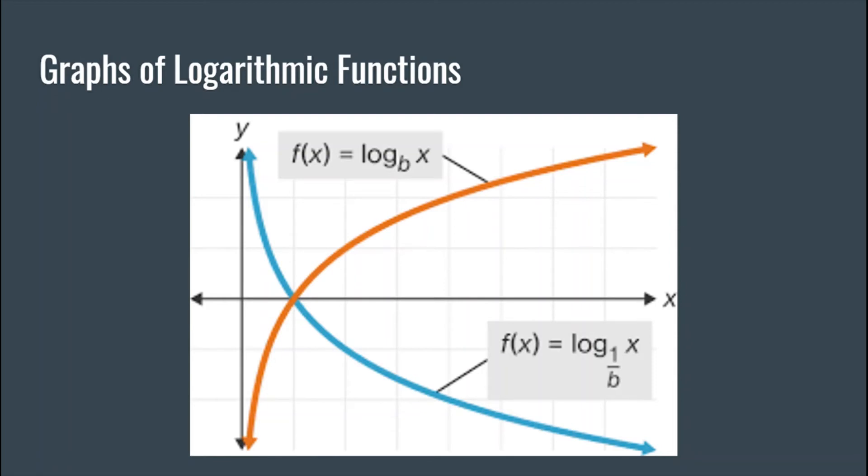Because the exponential function has an asymptote at the x-axis, logarithmic functions, being the inverses of exponential functions, will have an asymptote along the y-axis. You can see that these graphs don't cross the y-axis. They get really close but they'll never touch and they'll never cross.